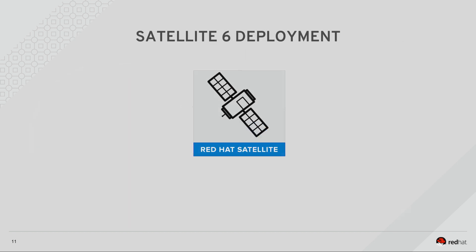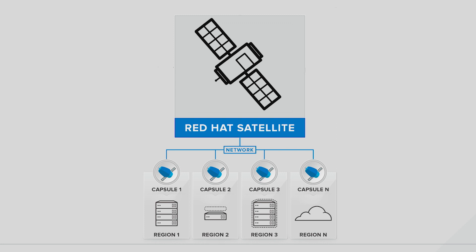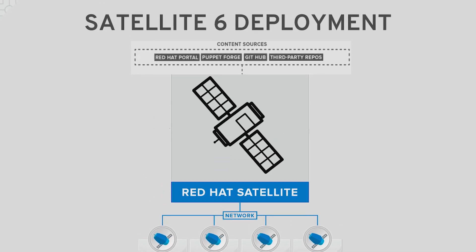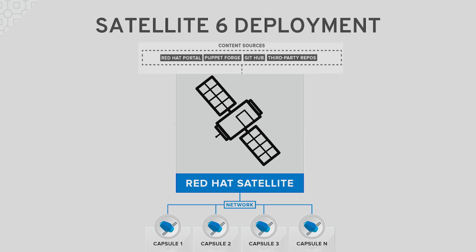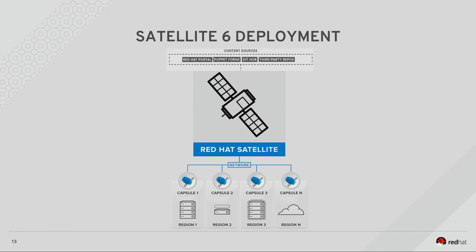Let's talk a little bit about a typical Satellite 6 deployment. In the center, you have the Red Hat Satellite server, which is probably in your primary data center. The Satellite server is connected to several capsules, each located in a different region — this could be a remote data center or a branch office. The Satellite server is seeded by several content sources, which are then synchronized to the capsule servers. So if you're using the Red Hat portal or some sort of third-party repo, you pull that down to your Satellite server, and then your Satellite server gives the content out to the capsules. Ideally, your hosts are connected to the capsules, the capsules are connected to the Satellite, and the Satellite is connected to your content sources — that's how your content will flow.